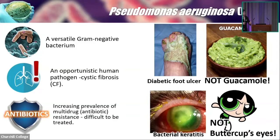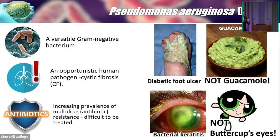Just to give you some hints: Pseudomonas aeruginosa is a green bacteria which is quite nasty. It is an opportunistic pathogen, especially for those cystic fibrosis patients as well — it will grow happily in the airway of their lungs. And it has caught the attention of scientists because it has an increasingly prevalent multidrug resistance, which means it is really hard to be cured.